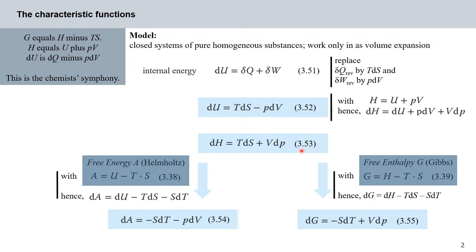Recalling expression 338 for the Helmholtz free energy A, we differentiate by DT and DS to get DA equals DU minus TDS minus SDT. Plugging this into our equations, we get an expression for the change in free energy: DA equals minus SDT minus PDV. That's a very important result.